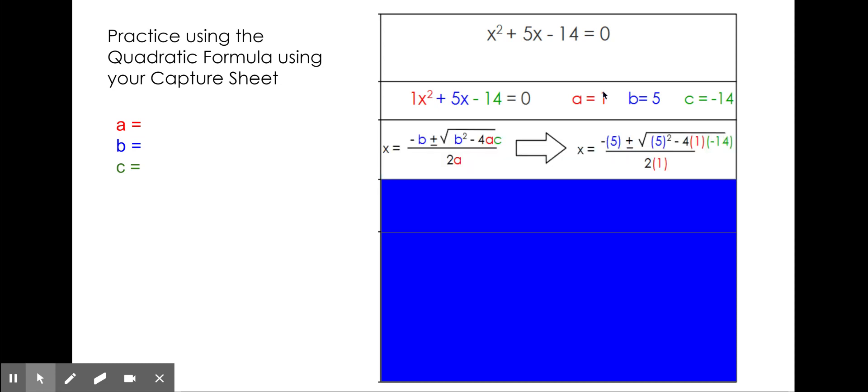Your formula should now look like this. Wherever you saw b, a, or c, you substituted these values into the formula. It is important to include these parentheses around a and c to remind you that you are multiplying 4 times 1 times negative 14.